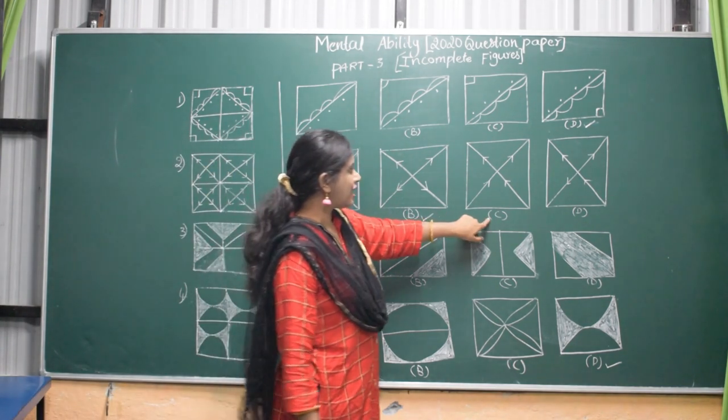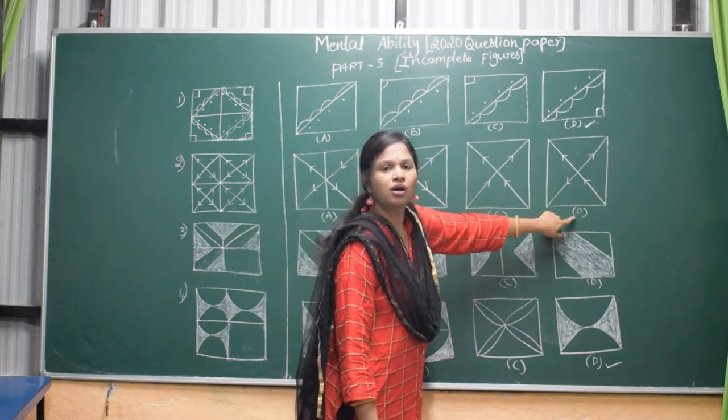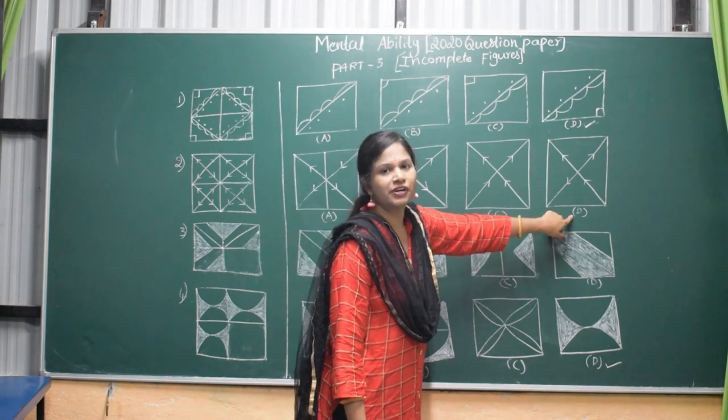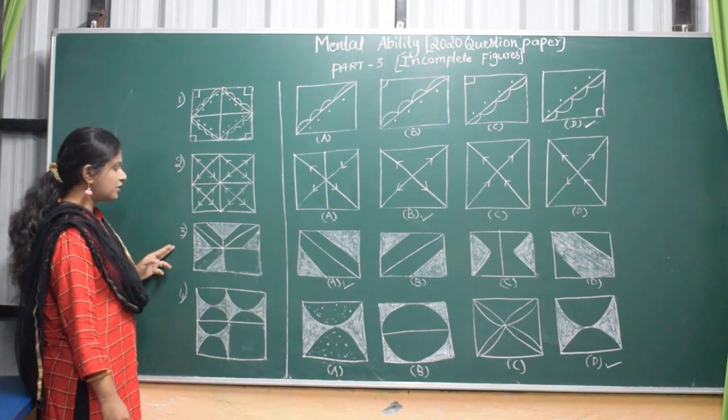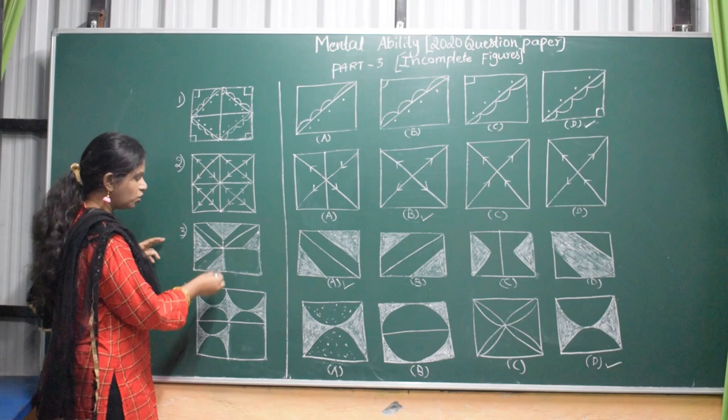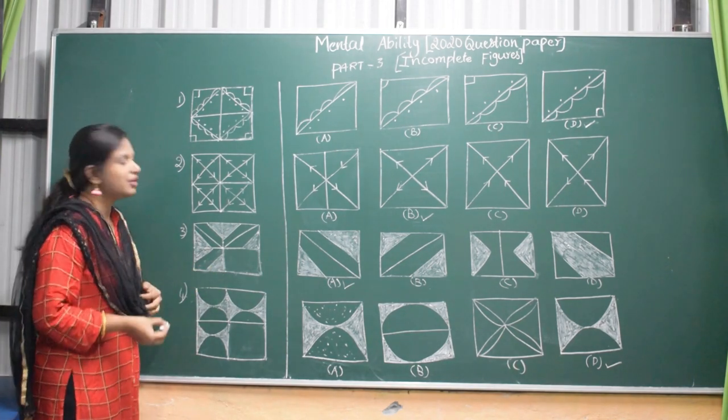Coming to C, the arrow marks are in different direction. Here also, D also different directions. So B is the answer. Coming to 3rd question. You draw once then it will be easy for you.